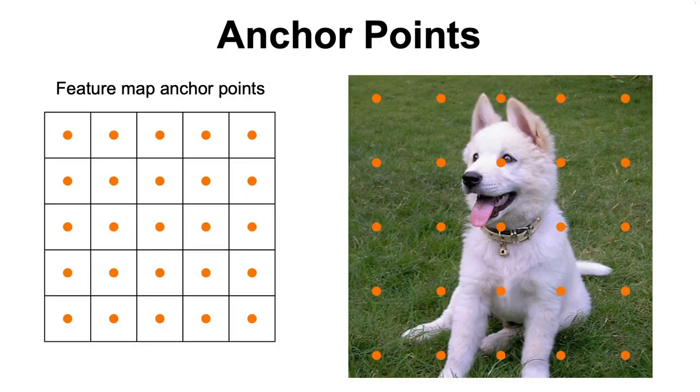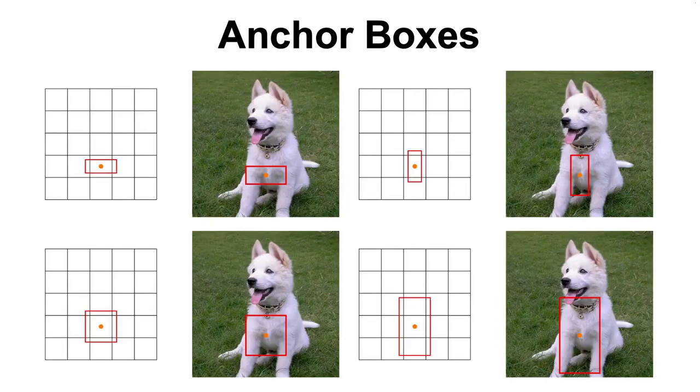The Region Proposal Network starts by generating anchor points that are placed at regular intervals over the image and act as a prior to predict object proposals. Then, for each anchor point, we have k predefined boxes of different sizes and aspect ratios that are used to generate region proposals that may or may not contain objects of interest.